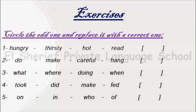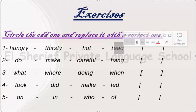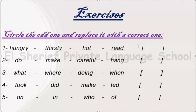Let's go for our exercise: circle the odd one and replace it with a correct one. Number 1: hungry, thirsty, hot, read. Hungry, thirsty, hot are adjectives, but read is a verb. So we will circle read and replace it with another adjective, like cold.